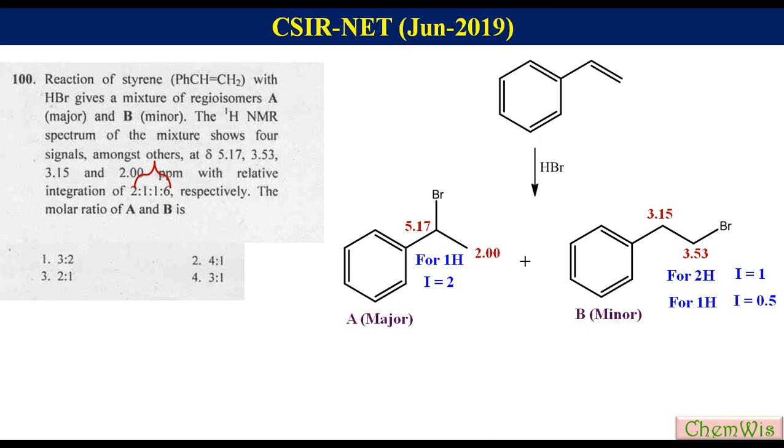So the molar ratio A is to B will be equal to 2 is to 0.5 that will be equal to 4 is to 1. So option number 2 is the right option.